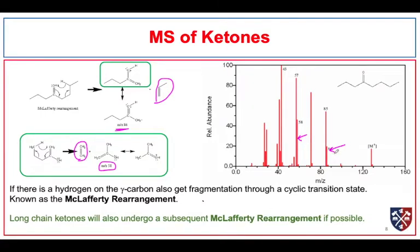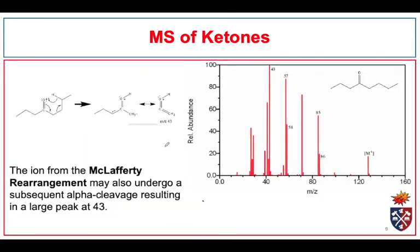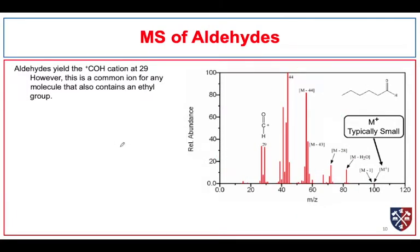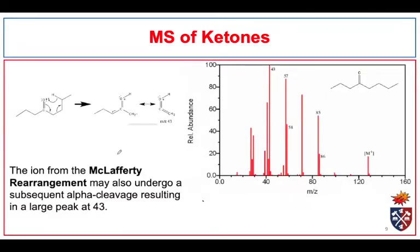That's not to say we will always get peaks at 86 and 58, but we can look for what would remain after a McLafferty-type rearrangement. The ion from the McLafferty rearrangement may also undergo a subsequent alpha cleavage, and in all such cases we get a protonated ketene. We often see a large peak at m/z 43, and in fact if this pathway is possible, that will often be the base peak — and that's what we see in this case.